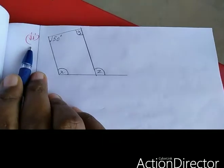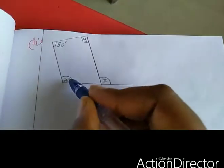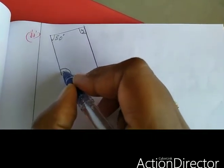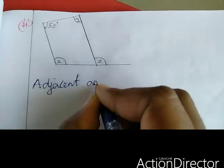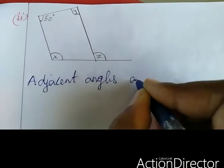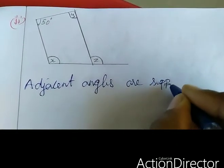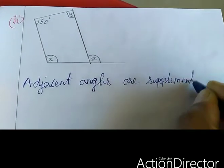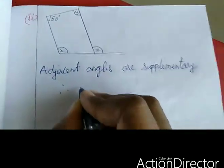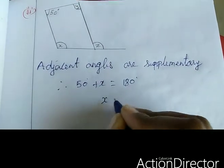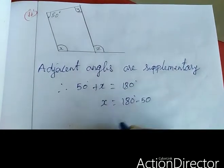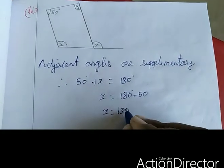Second subdivision. Here also we want to find out X, Y, Z. First, 50 degrees and X are adjacent angles, so if we add these two angles we get 180 degrees. Adjacent angles are supplementary. Therefore 50 degrees plus X equal to 180 degrees. So X equal to 180 minus 50, that is X equal to 130 degrees.